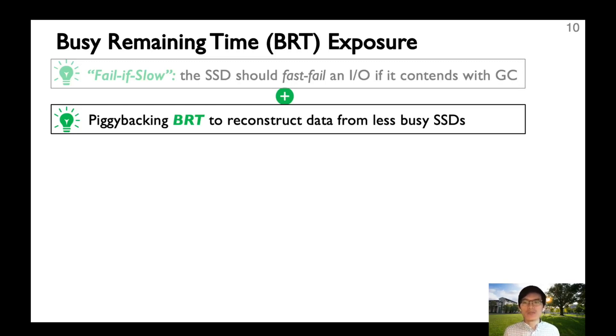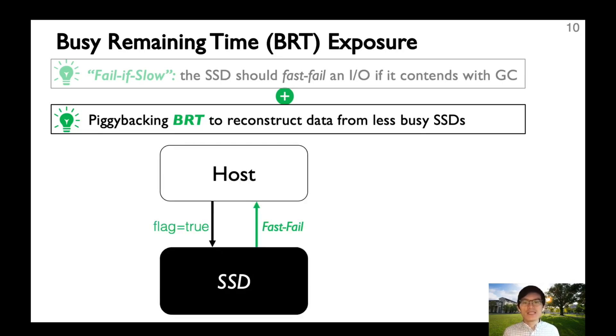Unfortunately, proactive reconstruction won't work when multiple SSDs are busy. To handle this, IODA extends the interface a little bit more to communicate the device-level busyness. In particular, the SSD knows exactly how long an IO will be delayed by GC. Then, in the fast-failed process, along with the busy signal, we also piggyback the busy remaining time to the host. After the host collects enough information about all the busy SSDs, it can force the read to wait for the less busy SSDs and perform reconstructions. This way, we could still save some latencies by waiting for the less busy SSDs.